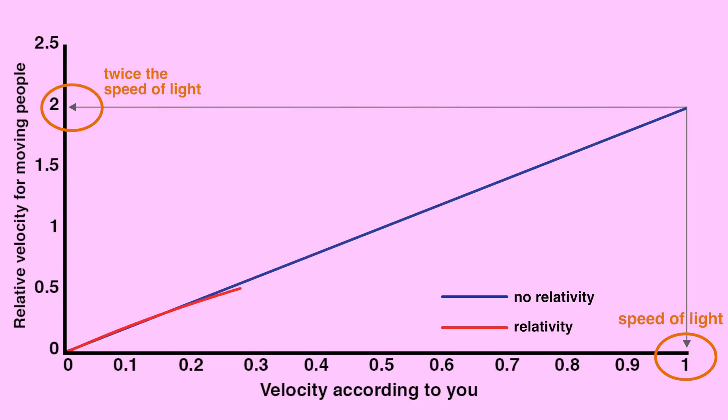And finally, the red line is what they would see if relativity is true. Even though both of them were moving at the speed of light as far as you're concerned, they'd see each other moving no faster than light, just as relativity says.